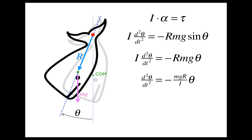Now we can determine what omega is. Omega squared is going to be mgr over I, and the period is 2pi over omega. So we can determine that the period of oscillation for this physical pendulum is 2pi times the square root of I over mgr.